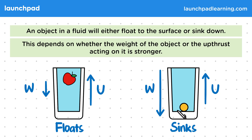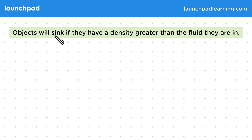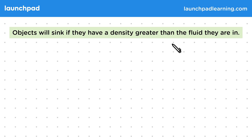But is there a way we can predict which of the two forces will be stronger? Objects will sink if they have a density greater than the fluid they're in. This is a key fact you'll need to recall for your exams, but you won't need to be able to explain why it's true.